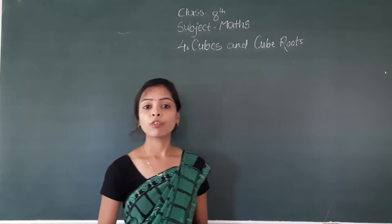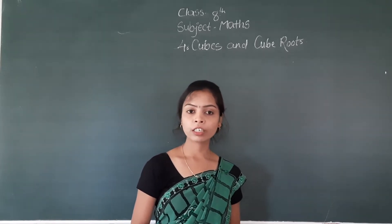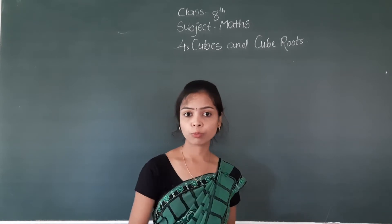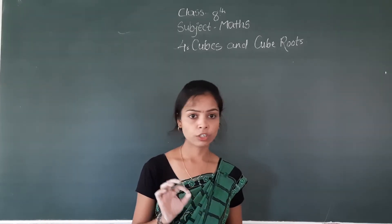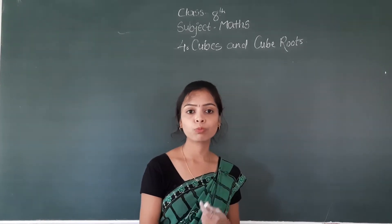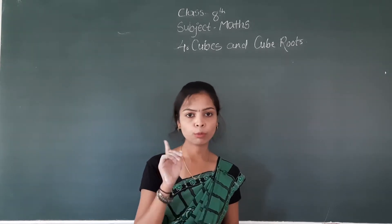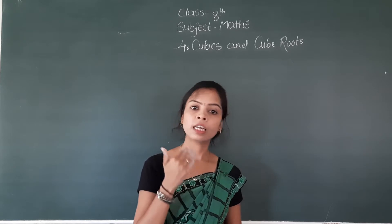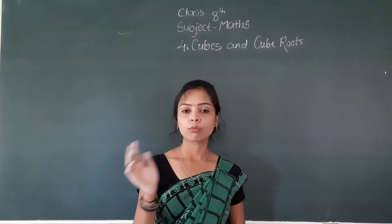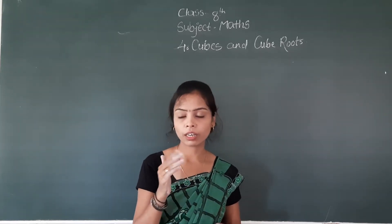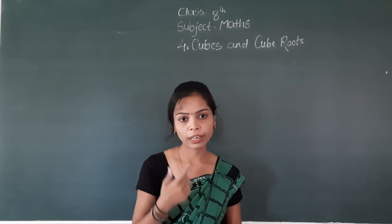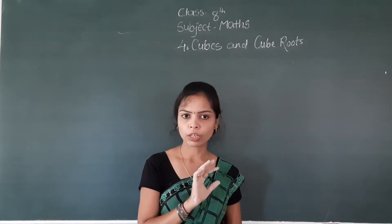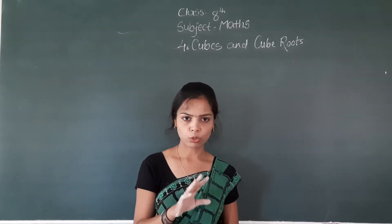In the previous lecture, what we have studied: finding the cube root of a cube number by estimation. We also studied cube root by prime factorization. And we studied finding the smallest number — if a number is not a perfect cube, what smallest multiplier makes it a perfect cube. We have studied all of that.